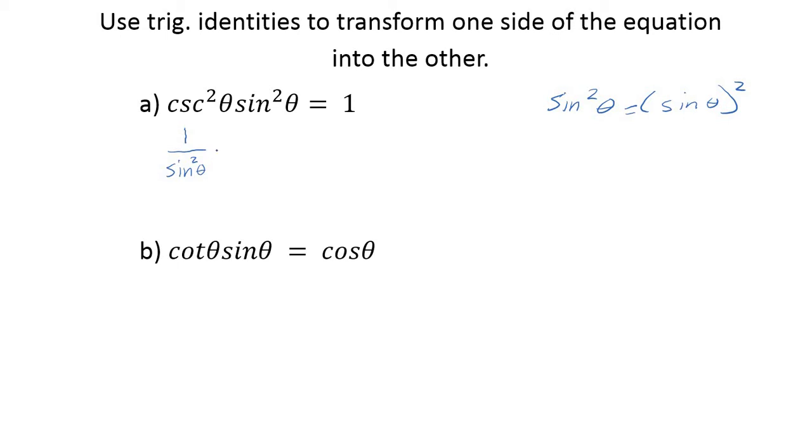So cosecant squared is one over sine squared, right? Because cosecant is just the reciprocal. So times sine squared, of course, and you can already see this, I'm sure, but let me just write it out and try to simplify it. Really lay it out for you. Well, sine squared over sine squared is one, of course.